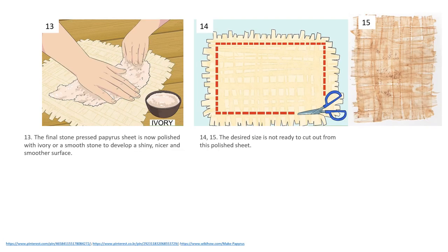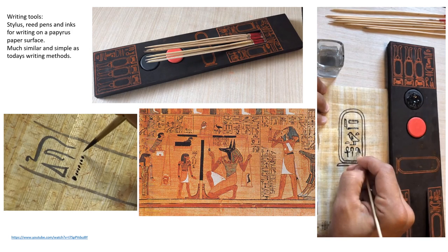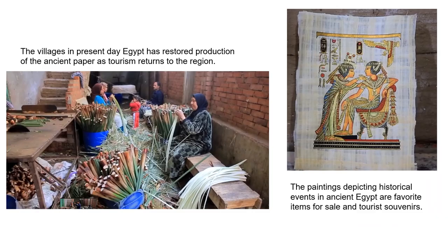In the final step, ivory powder or a smooth stone is rubbed on the surface of the papyrus sheet to develop a shiny, smoother surface, and the desired size is cut out. The papyrus paper sheet is now ready to write on; simplified reed pens are used for writing with ink. The ancient art of making papyrus paper has been revived in several villages in Egypt and is now a major tourist attraction. Paintings depicting historical events in ancient Egypt are favorite items for sale and tourist souvenirs.